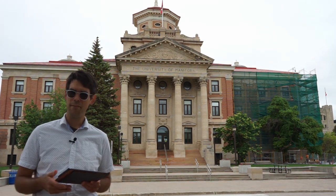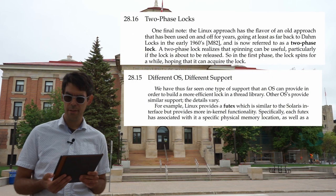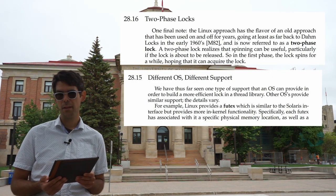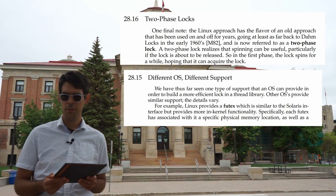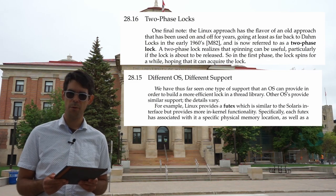Sections 28.15 and 28.16 — different OS supports and two-phase locks — are explicitly marked as optional and will be skipped.